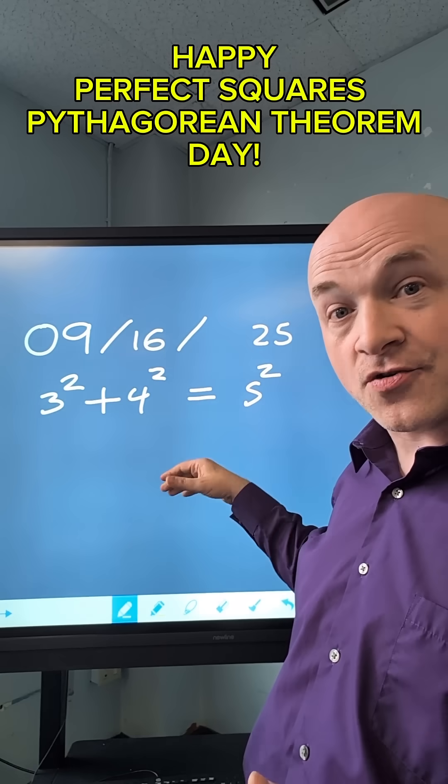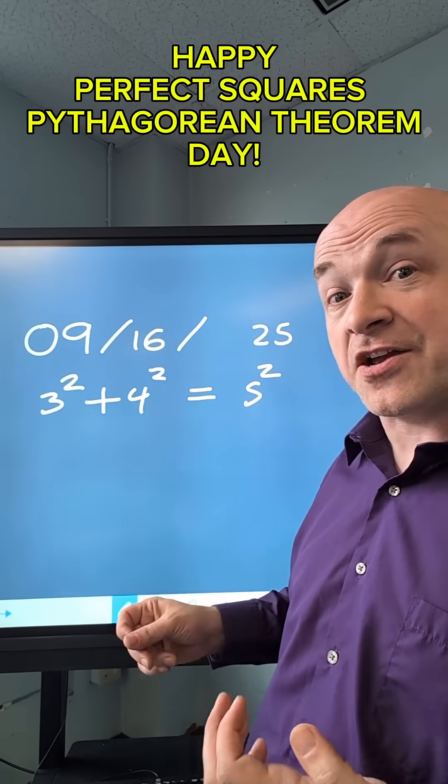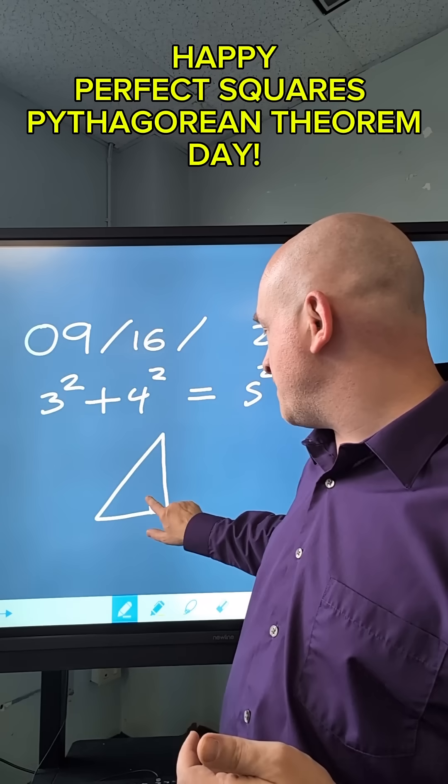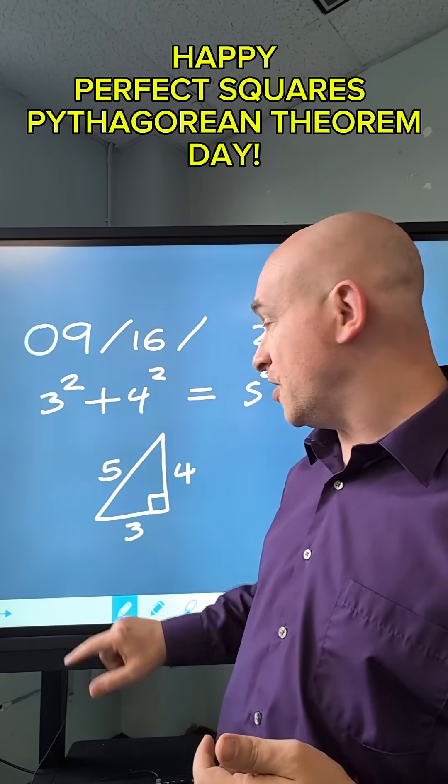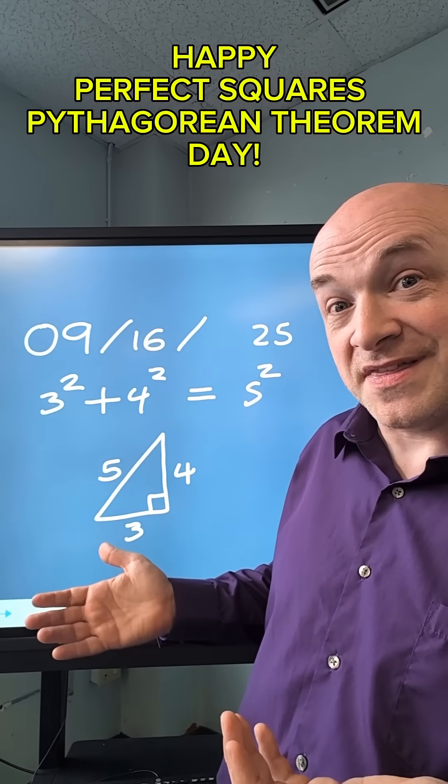since they work together in the Pythagorean Theorem formula, that means that these are a Pythagorean triple, which makes them a set of three possible integers that could represent the three sides of a right triangle. So that's why it's also Pythagorean Theorem Day.